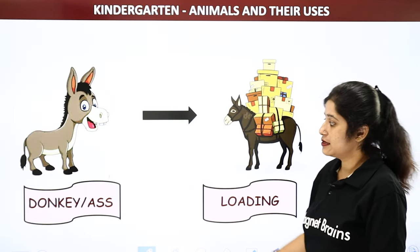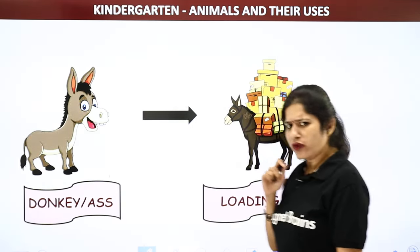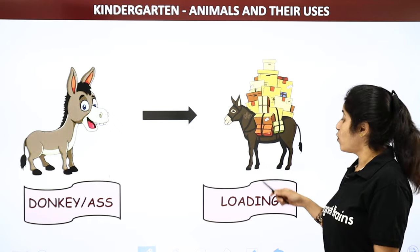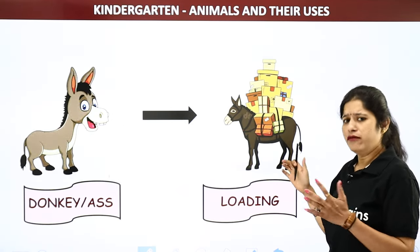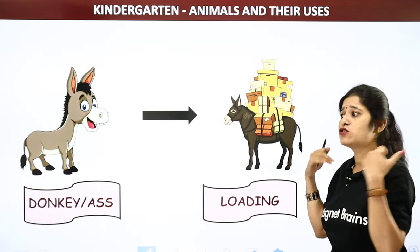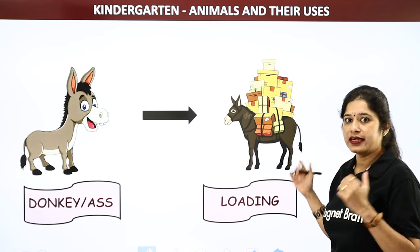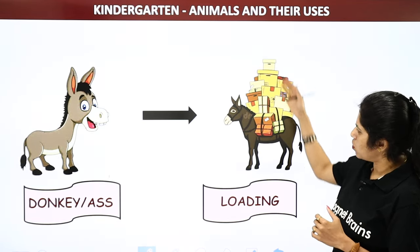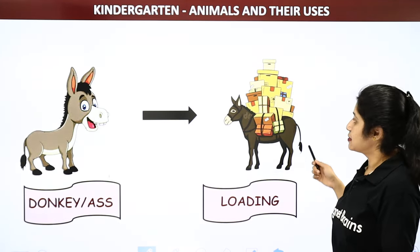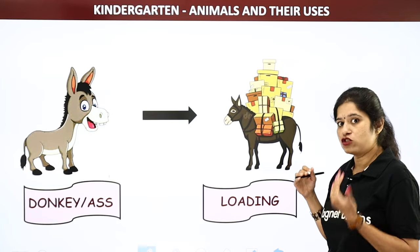The next animal is a donkey — it is also known as ass. How do we use donkeys? We use donkeys for loading. When we have to carry lots of goods and items from one place to another, we use donkeys for loading those goods. Can you see there are so many baggages on the back of the donkey? So we use donkey as a loading animal for shifting goods and items from one place to another.